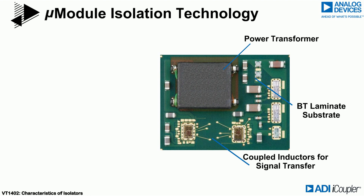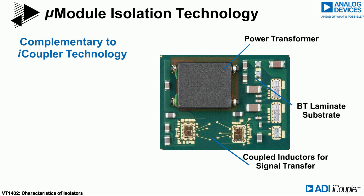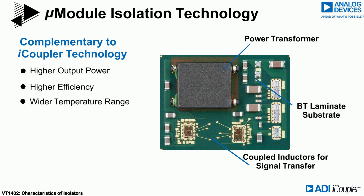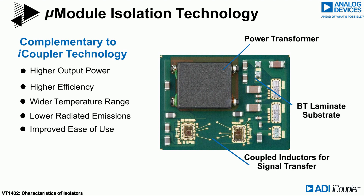Micromodule technology is complementary to I-coupler technology, offering many benefits including higher output power, higher efficiency, wider temperature range, lower radiated emissions, and improved ease of use.